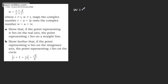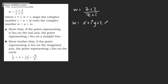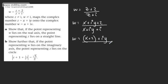So W = (Z+2)/(Z+I). Writing Z in terms of X and Y, W = (X+iY+2)/(X+iY+I). Collecting real and imaginary parts, W = (X+2 + iY) / (X + i(Y+1)).